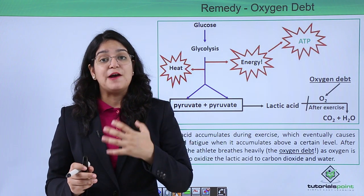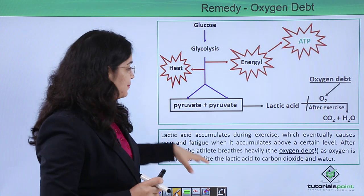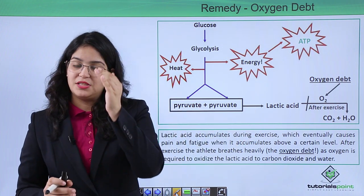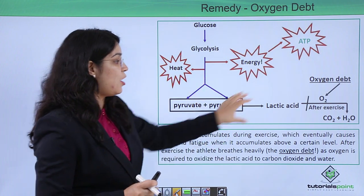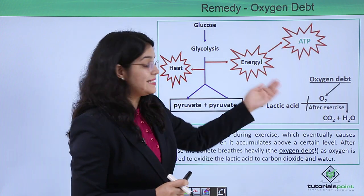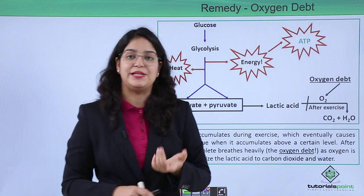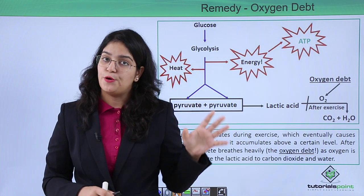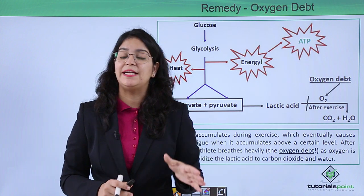After a full exercise session, when a person relaxes, the heart and lungs still breathe very fast to compensate for the oxygen deficit in our body. When they again provide sufficient oxygen, this lactic acid is oxidized into carbon dioxide and H₂O, and the muscles return to their normal condition.